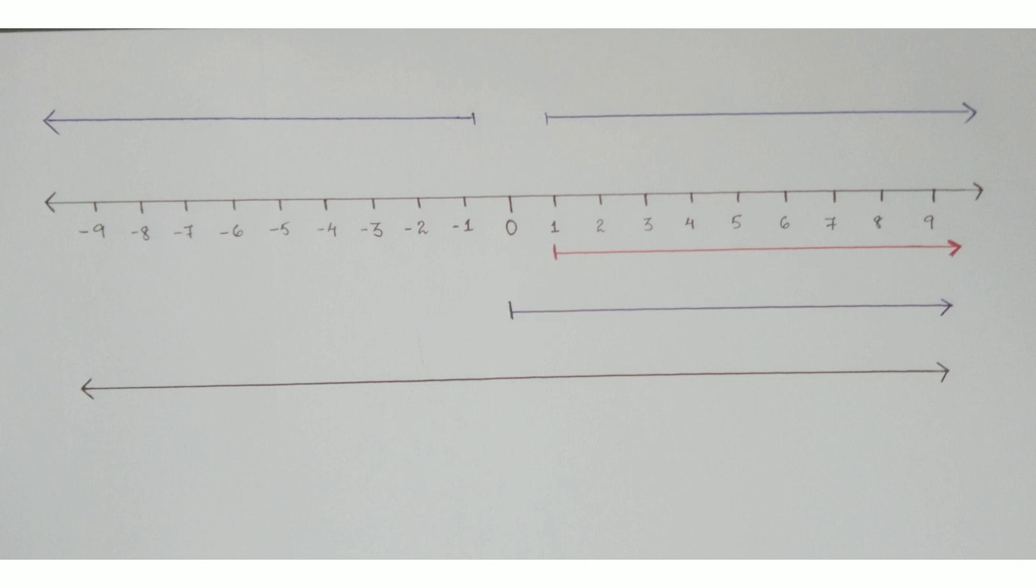In the middle, we have 0, and starting from the right, it goes up 1, 2, 3, 4, 5, till infinity, till the end. Uncountable. So, on the right side, we have from 1, 2, 3, 4, we have what we call the positive numbers.